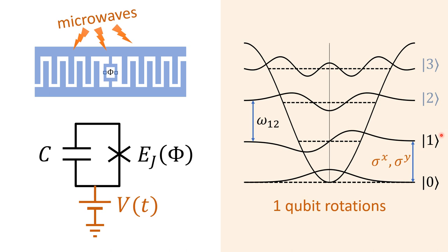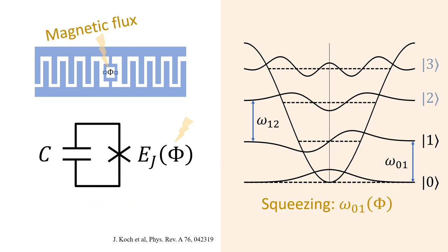This large anharmonicity allows us to address the 0 and 1 states separately, implementing single qubit rotations between them without leakage into the states with 2, 3, and more excitations.